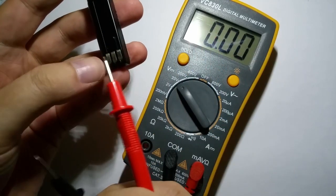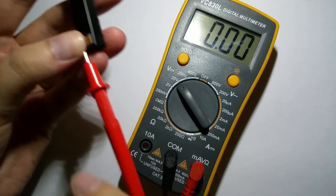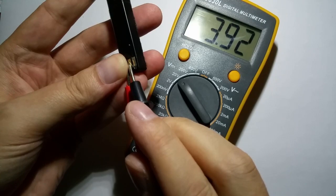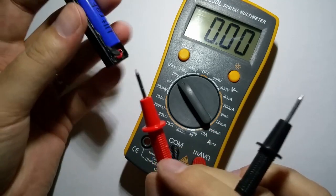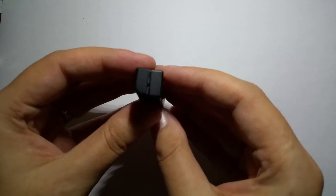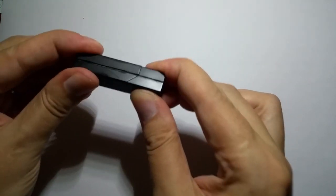We can now close the case. Check for the right position and you should be able to snap the two halves. The bond between the two pieces should be strong enough.